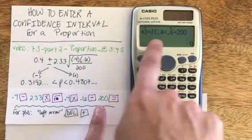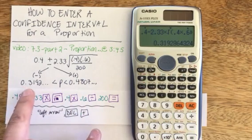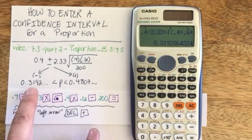After entering the last piece of the square root, one parenthesis set, I can hit the equals button to get my lower bound of 0.319 etc.